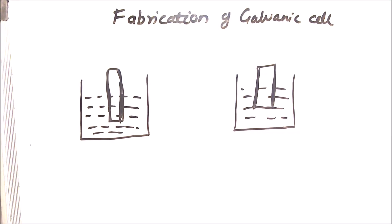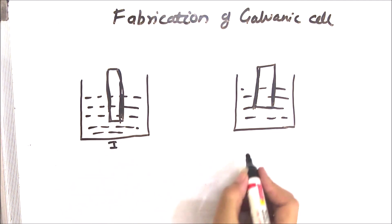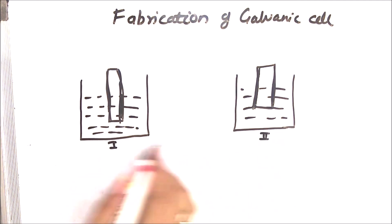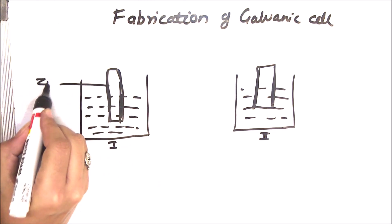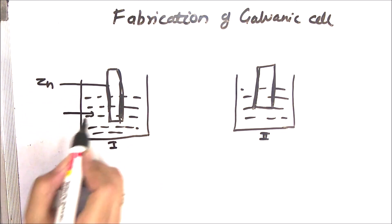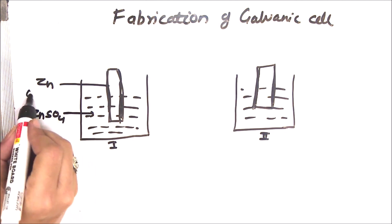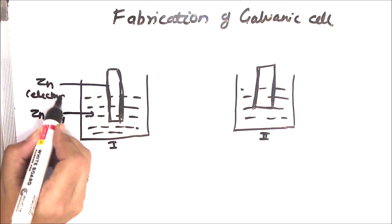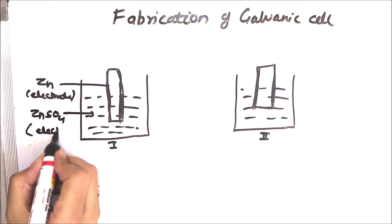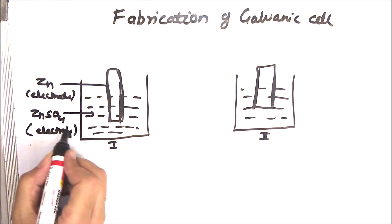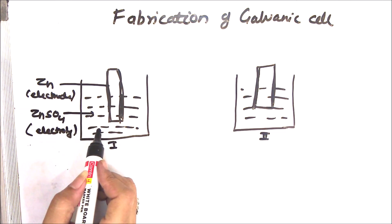In a galvanic cell, two beakers are there. The first beaker has an electrode — this electrode is zinc — which is dipped in its own ion solution, that is zinc sulfate. Here zinc is the electrode and zinc sulfate is the electrolyte. So the zinc is dipped in the solution of its own ion electrolyte, that is zinc sulfate.